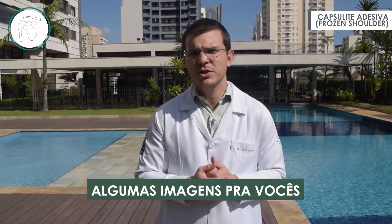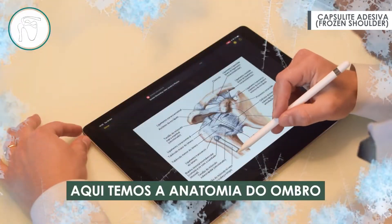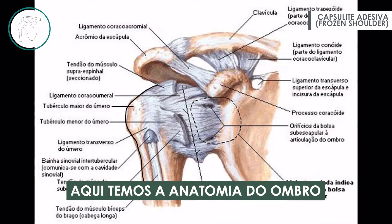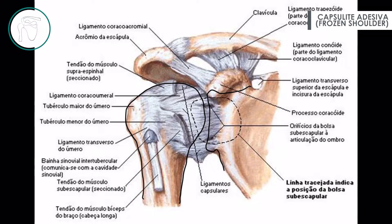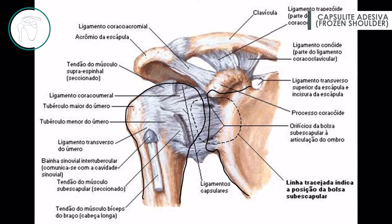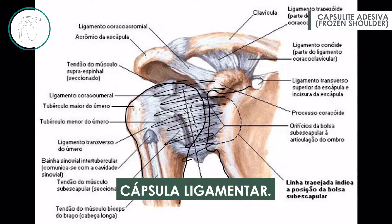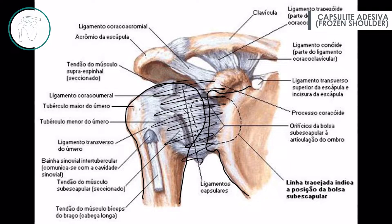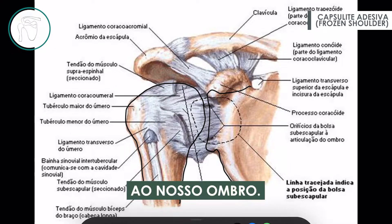Now I'd like to show you some illustrations to clear out this concept. Here we have the shoulder anatomy. We can see the humerus — the arm bone — and this is the scapula. Covering them, we have this complex ligamentary capsule, which gives stability to our shoulder.